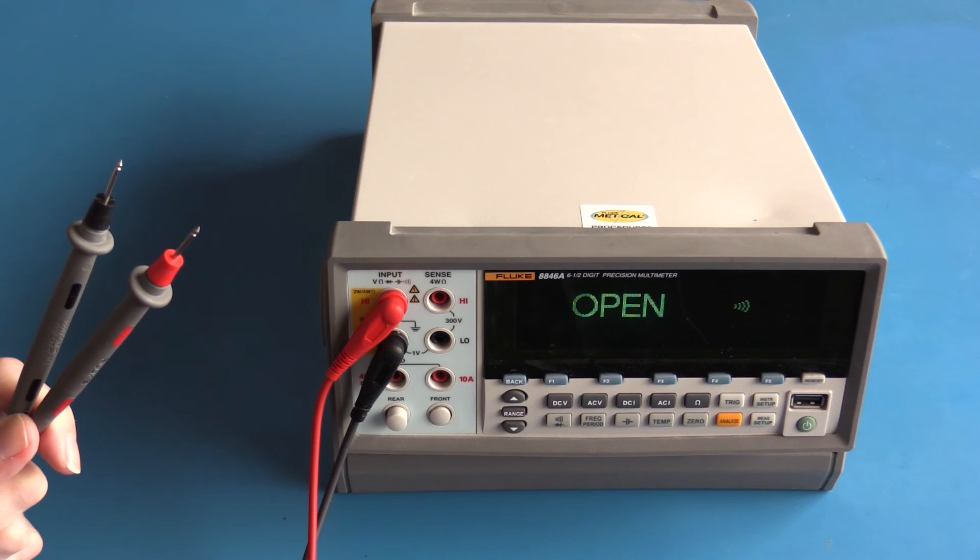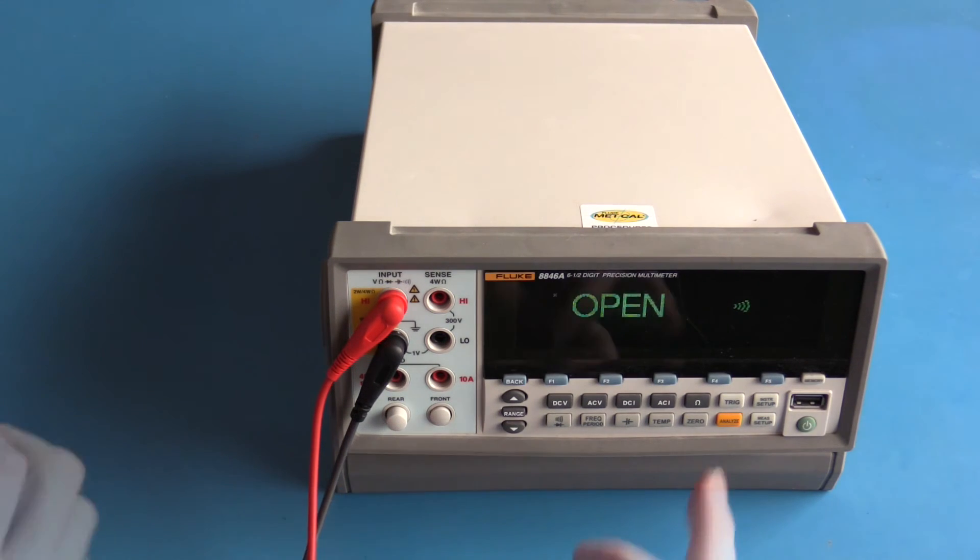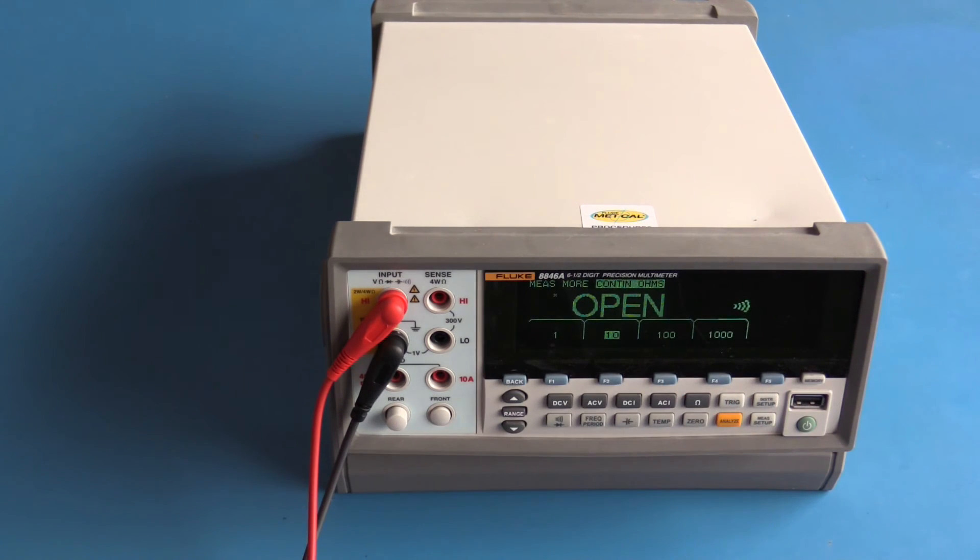We're now looking at continuity. It's a nice tone. A nice feature of the continuity mode is the ability to set the threshold. The threshold can be set to 1 ohm, 10 ohms, 100 ohms or 1 kilo ohm. I generally just leave it in the 10 ohm setting.